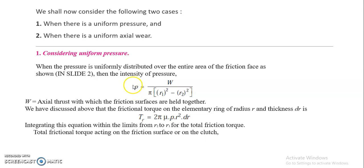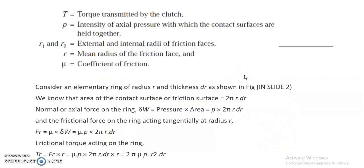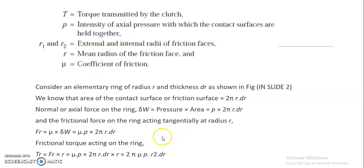For the first case, the pressure formula is: pressure P = force/area, where force is the axial force W and the area of the frictional surface is π(R1² − R2²). So P = W / [π(R1² − R2²)], where W is the axial thrust. We have already found that the elemental torque is 2πμP·r²·dr, which is the frictional torque acting on the ring.